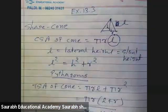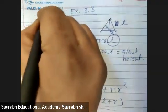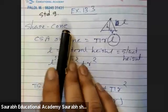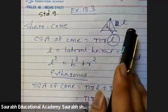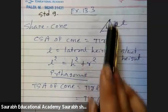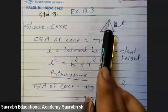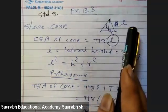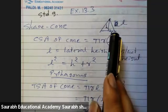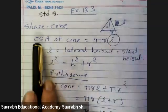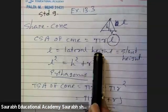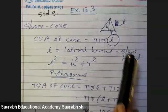Size 13.3, standard 9. The shape is a cone. A cone has three types of faces. One is height, that is perpendicular height. This is lateral height, we call it L, or curved height we can say. And this is the radius. So the curved surface area of a cone will be π R L, and L is the lateral height or slant height or curved height.